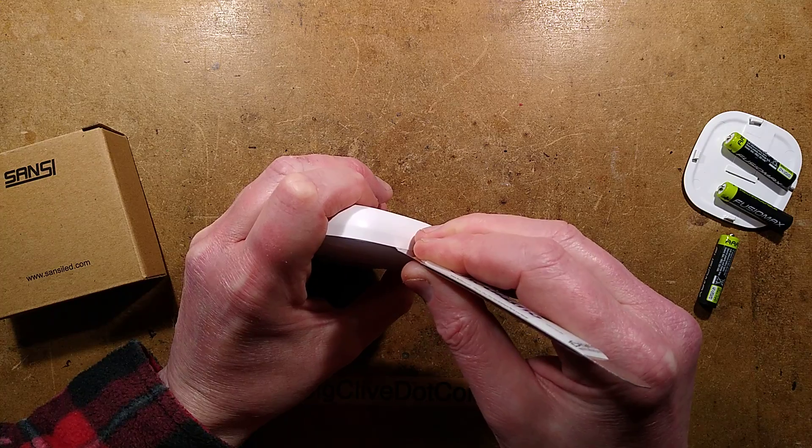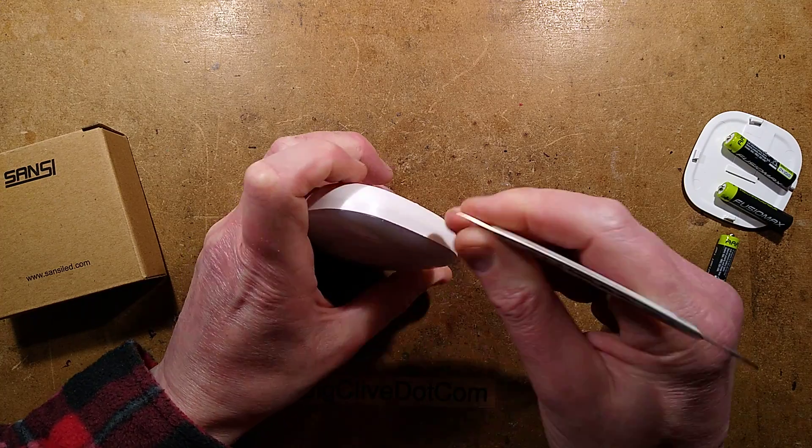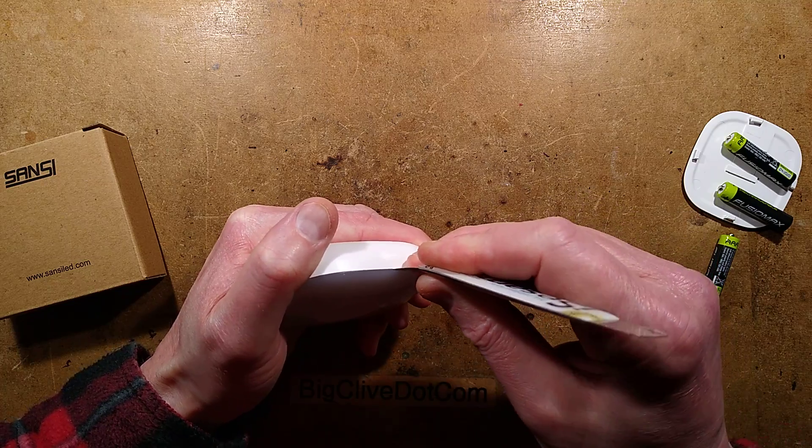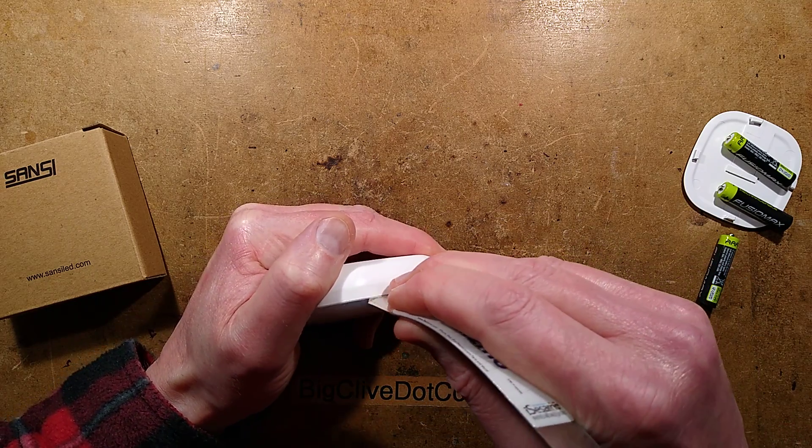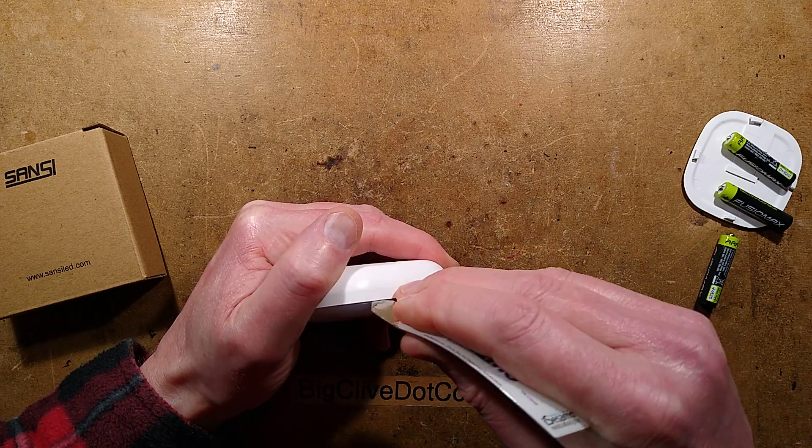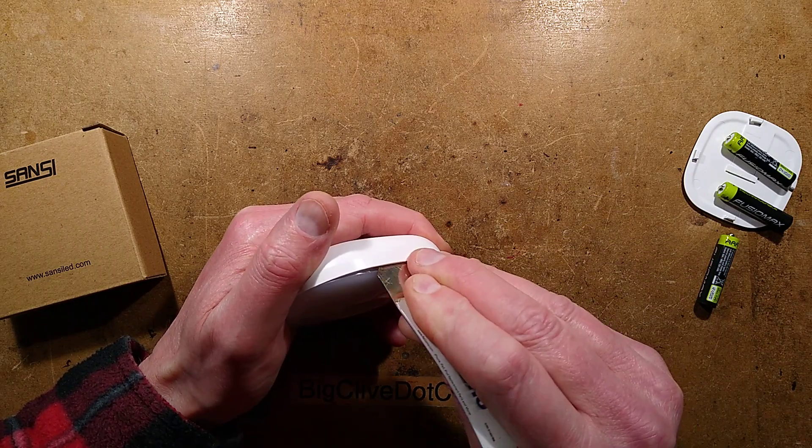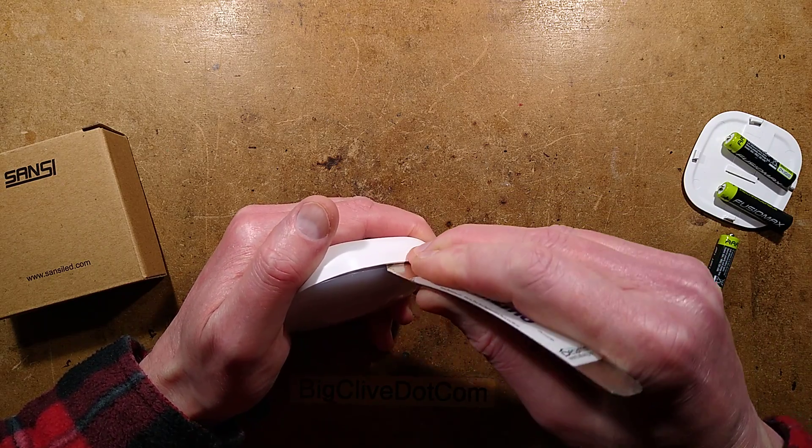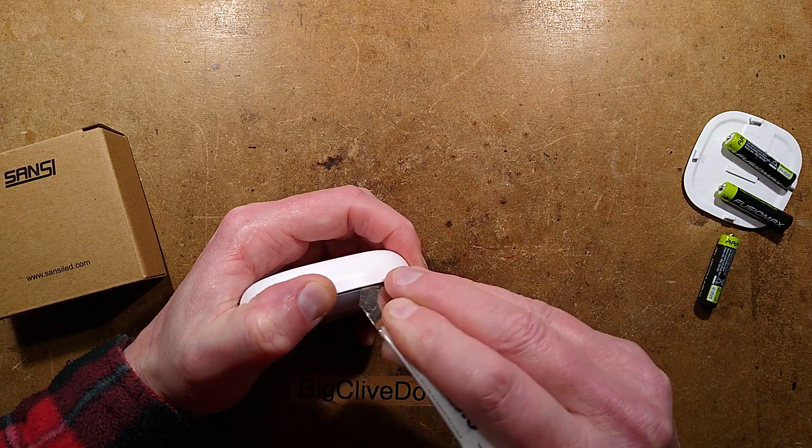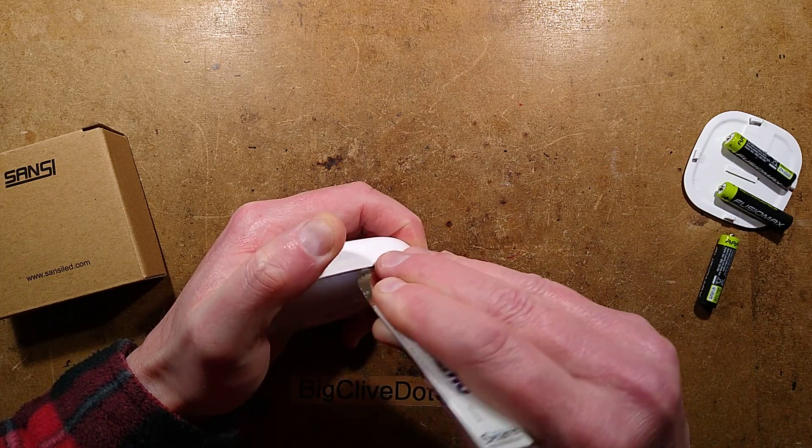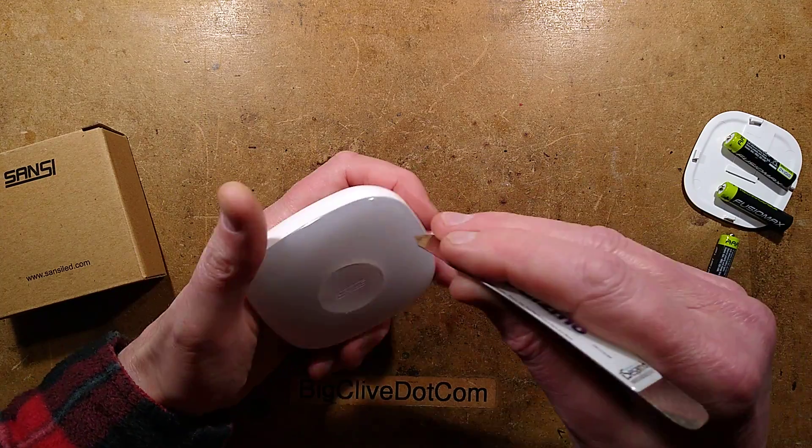Let's see if we can spudge into this and get the cover off. First indications are that it's either very tight or it's actually glued on. It's unclipping but it is very well clipped in. My apologies if there are any loud snapping, popping, clicking noises. The microphone tends to pick them up and saturate, resulting in a very high audio peak.